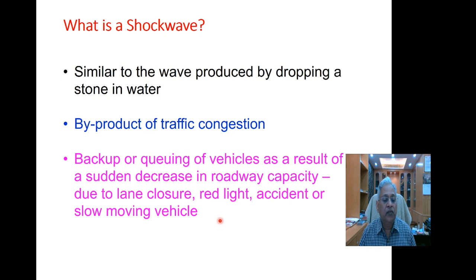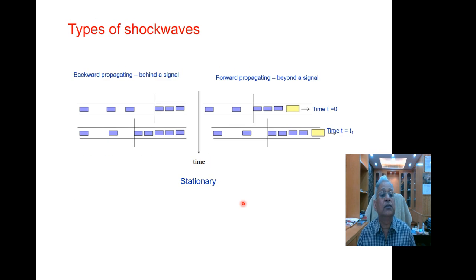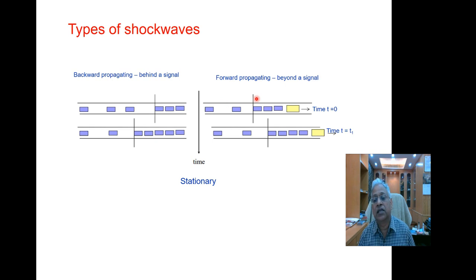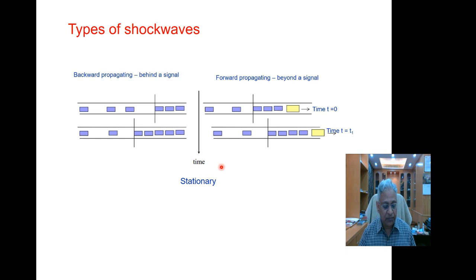In part one we discussed the shockwave along a highway when a traffic stream meets a slow-moving vehicle, and in part two we discussed shockwave behind a traffic signal. In this third part we discuss the general theory of propagation of shock waves. There are three types: a backward propagating shock wave seen behind a traffic signal, a forward propagating shock wave observed beyond a traffic signal when the light turns green, and a stationary shock wave, which occurs when two streams with the same flow value or different densities, or with different flows and same density, meet each other.